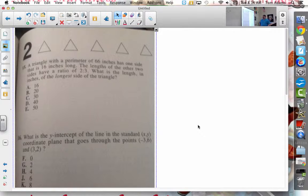So now this one's a little harder to read, so I'll read it to you. For problem number 15, it says a triangle with a perimeter of 66 inches has one side that is 16 inches long.